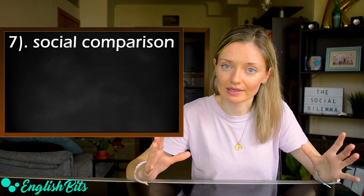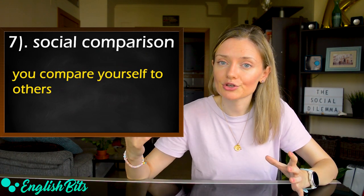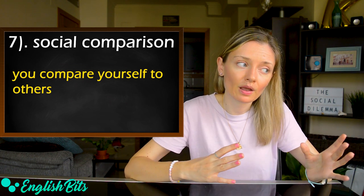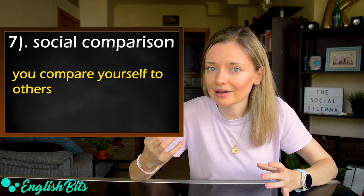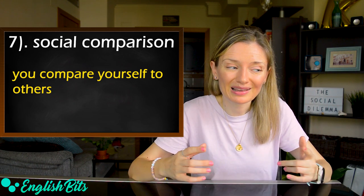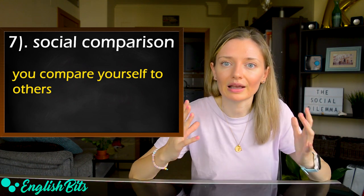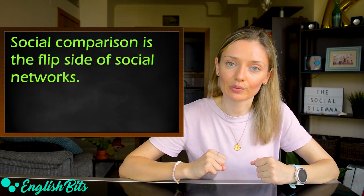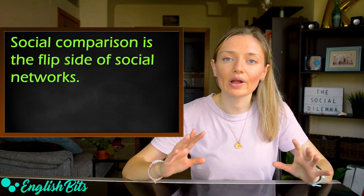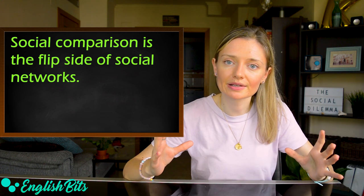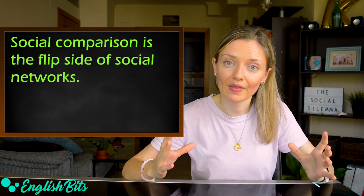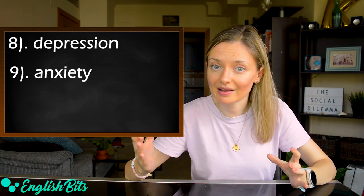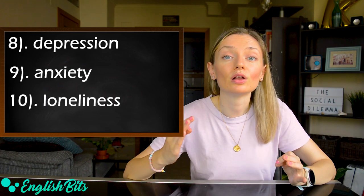Number seven: social comparison. It's when you compare yourself to others. We used to do it in the past as well, but we compared ourselves to our friends and neighbors. But now we do it on a global scale. For example, social comparison is the flip side of social networks. And now let's look at three negative effects of social media. Number eight: depression. Number nine: anxiety. And number ten: loneliness.